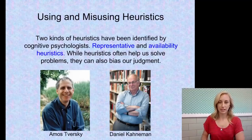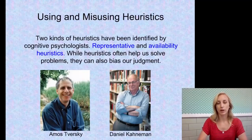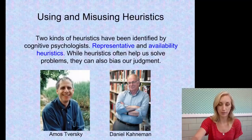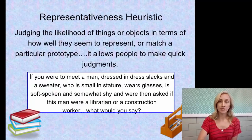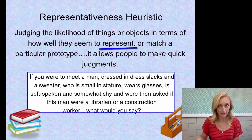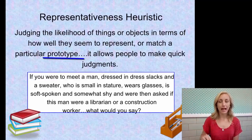Now let's talk about using and misusing heuristics — for thinking and problem solving in ways beyond the logical or mathematical. Cognitive psychologists have identified two kinds of heuristics: representativeness and availability. While heuristics often help us solve problems, they can also bias our judgment. A representativeness heuristic involves judging the likelihood of things in terms of how well they seem to represent or match a particular prototype, allowing people to make quick judgments.